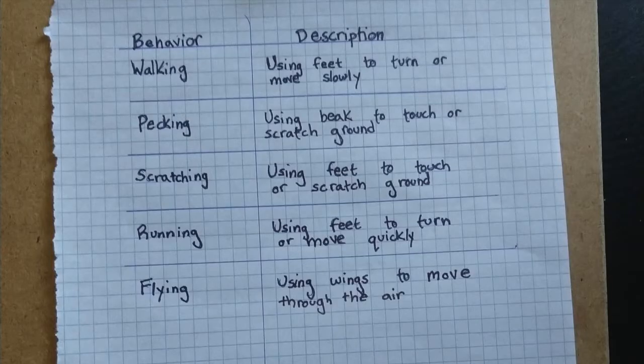These definitions that you make for behaviors are an example of an operational definition, which is a clear, concise, detailed definition of a measure. It is important to clearly define your behaviors so that it is easy to distinguish one from another.